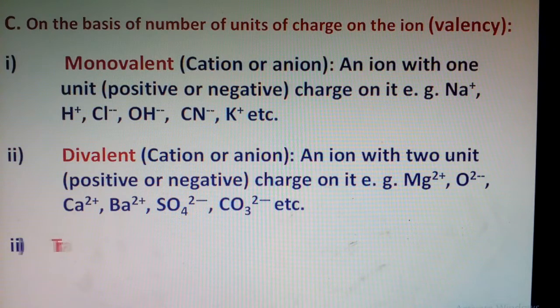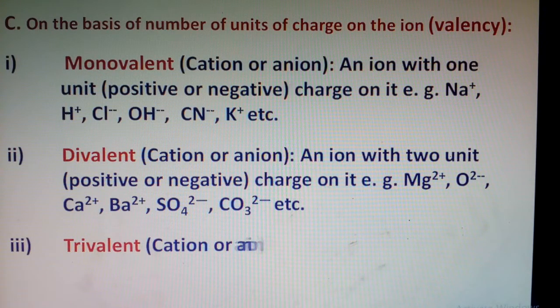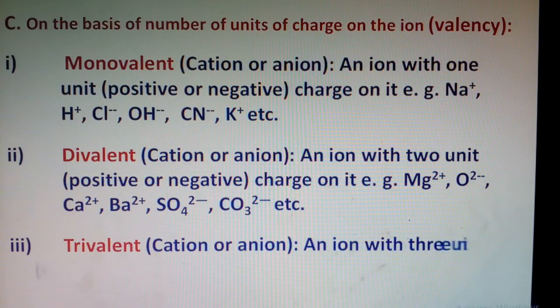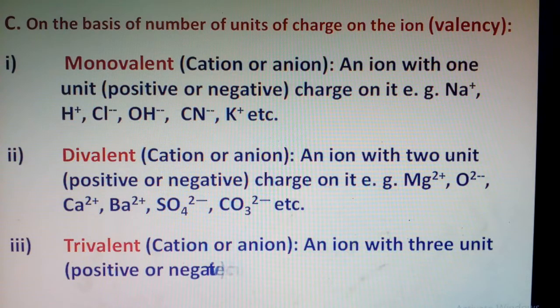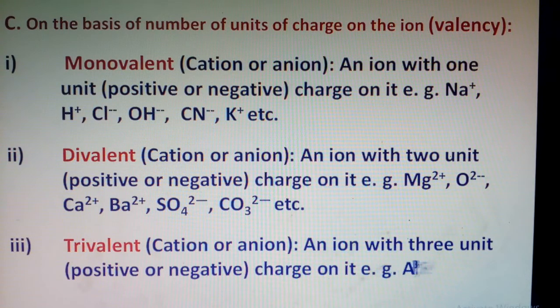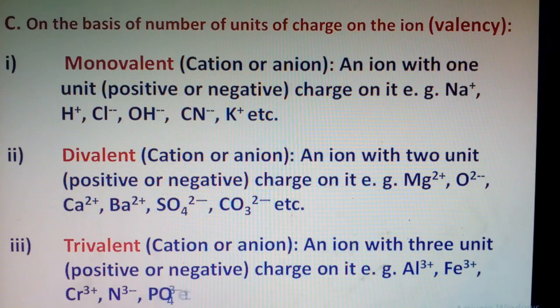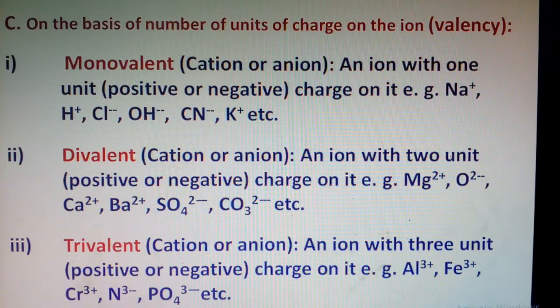Trivalent ions: those ions which have three units of either positive or negative charge. Examples include aluminum 3+, iron 3+ called ferric ion, chromium 3+, nitride ion, phosphate ion, etc. Up to this level—grades 7 to 9—we have monovalent, divalent, and trivalent ions, which we will discuss here.